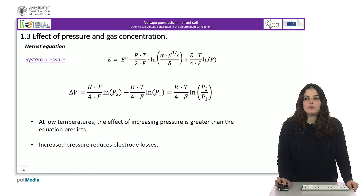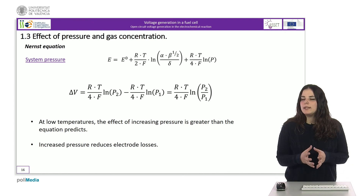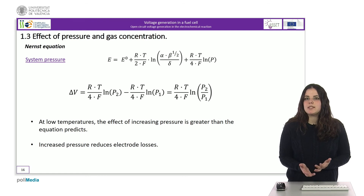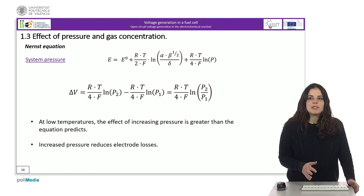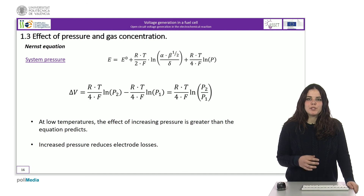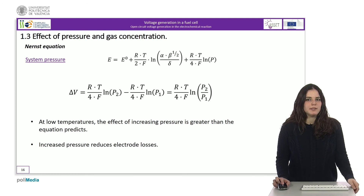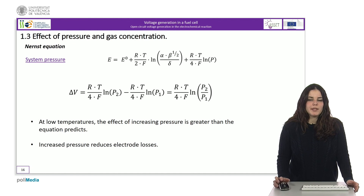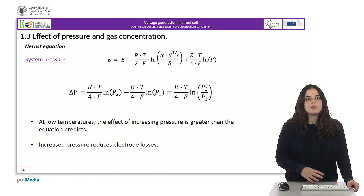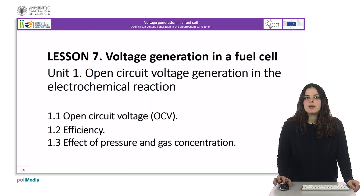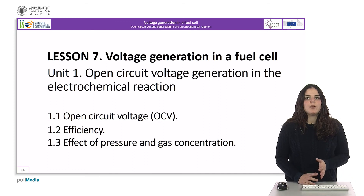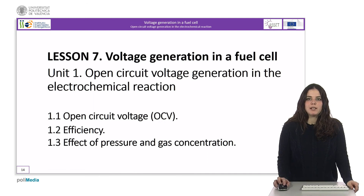Finally, if only the term of the system pressure is considered, it can be calculated that increasing pressure results in an increase in the voltage generated by the fuel cell. Experimental tests show that in low temperature fuel cells, the increasing voltage with pressure is greater than what the expression predicts, mainly because increasing pressure reduces the losses in the electrode and increases its activity. However, before considering increasing pressure, it must be assessed whether the energy consumed by the compressor compensates for the increase in voltage obtained. In most systems, it doesn't compensate. With the explanation of all these concepts, we conclude the unit about the open circuit voltage generation in the fuel cell electrochemical reaction.